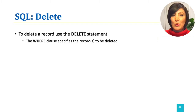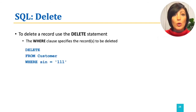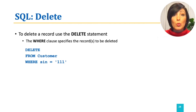To delete a record, we use the DELETE statement. The complexity here is that we have to define which rows of the table we want to be deleted — that is defined by the WHERE clause. For example, to delete from the table CUSTOMER the row with SIN number equal to 111, we say DELETE FROM CUSTOMER WHERE SIN = 111.